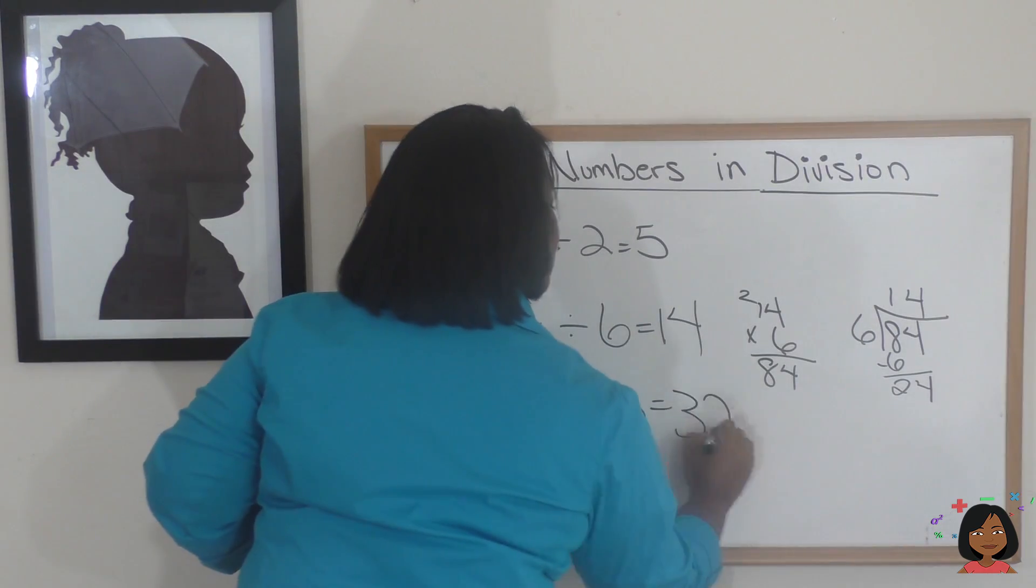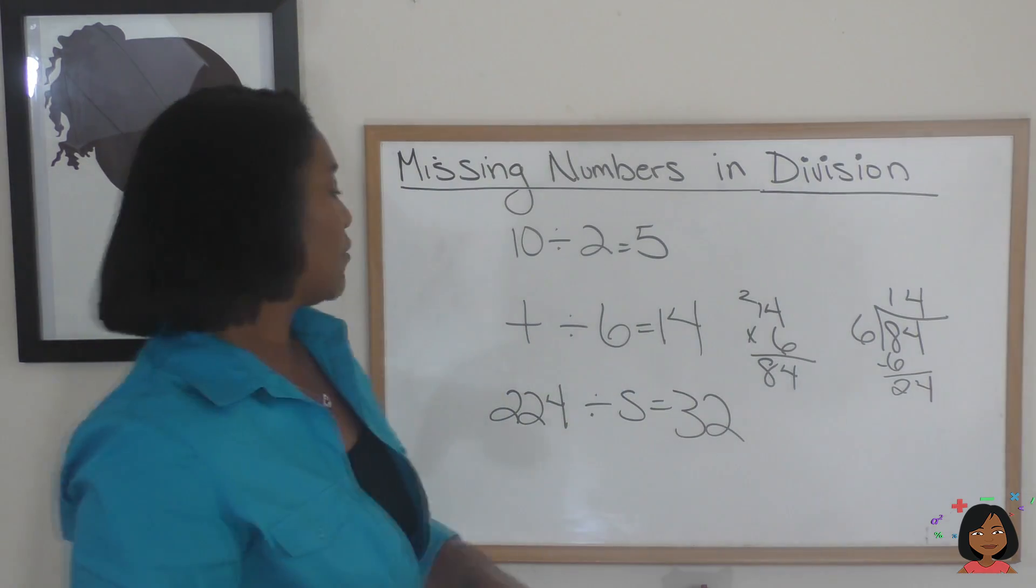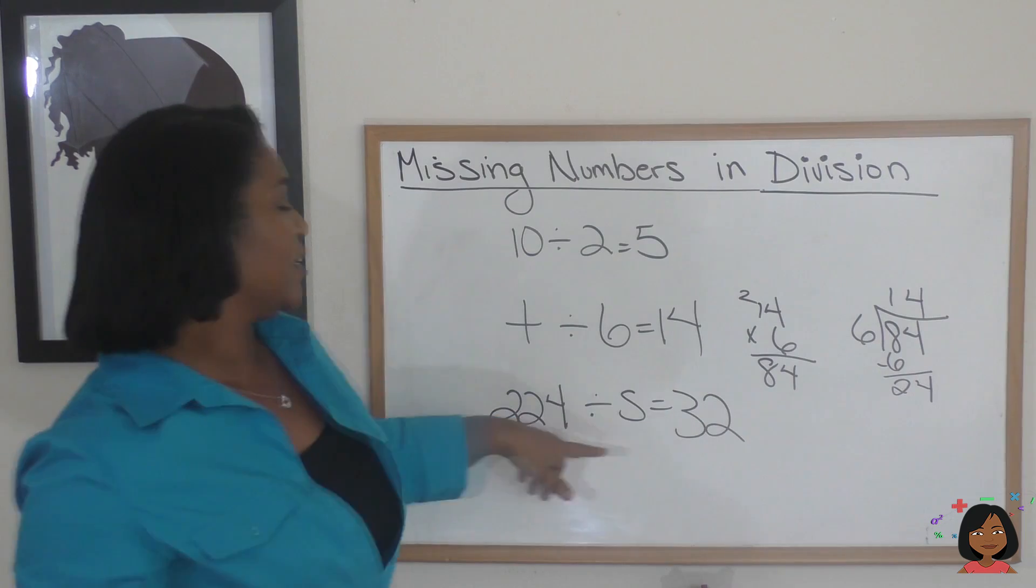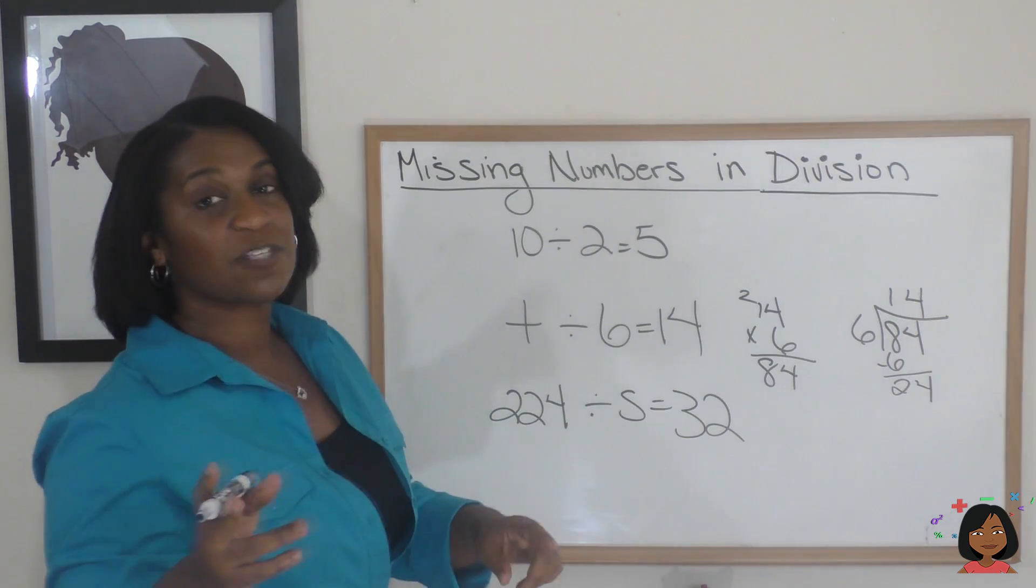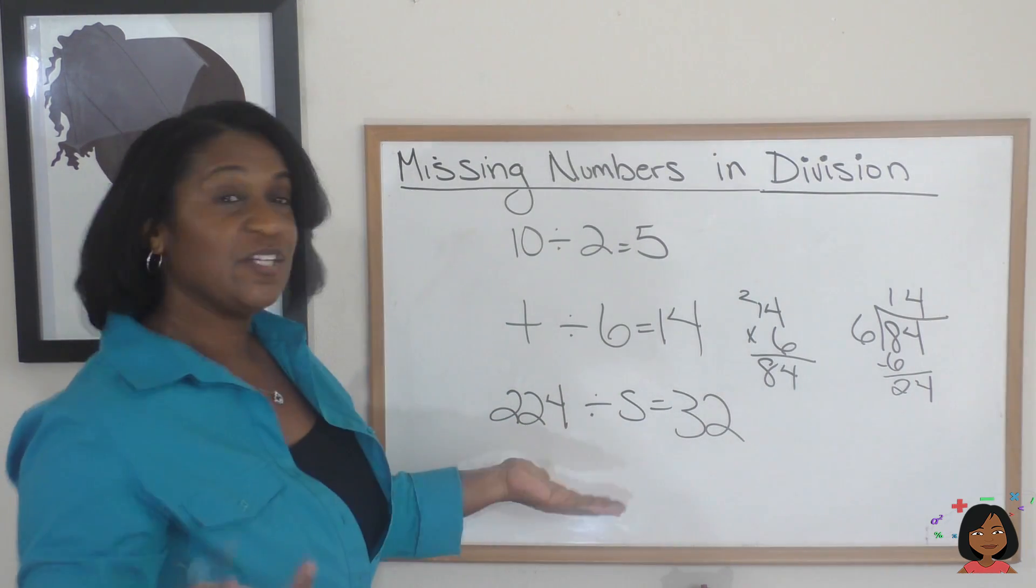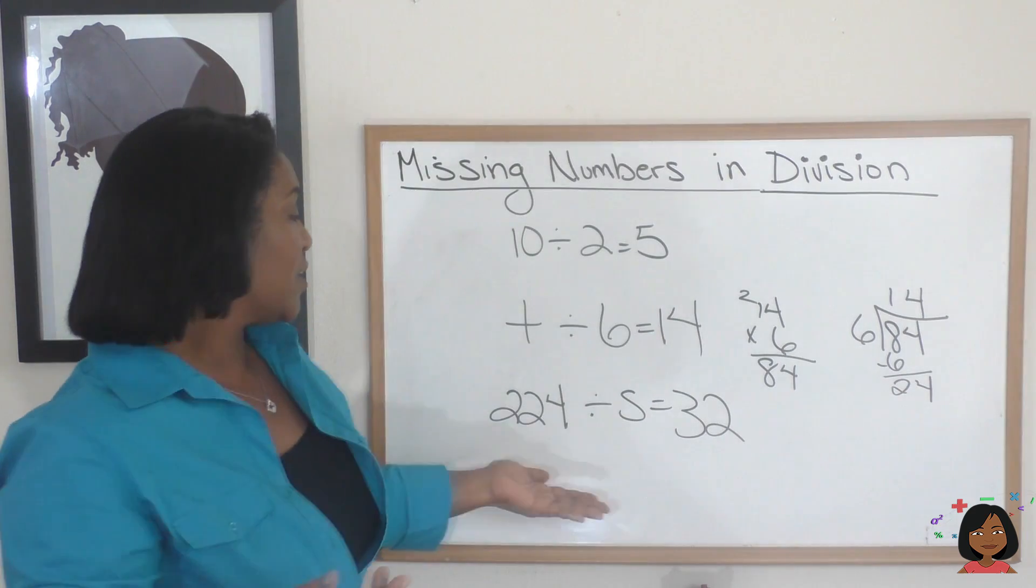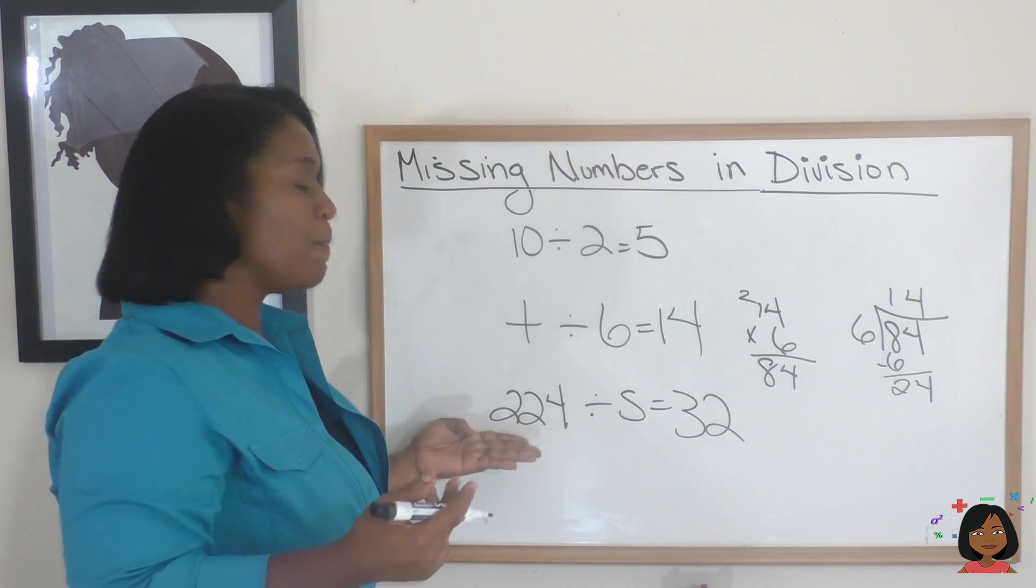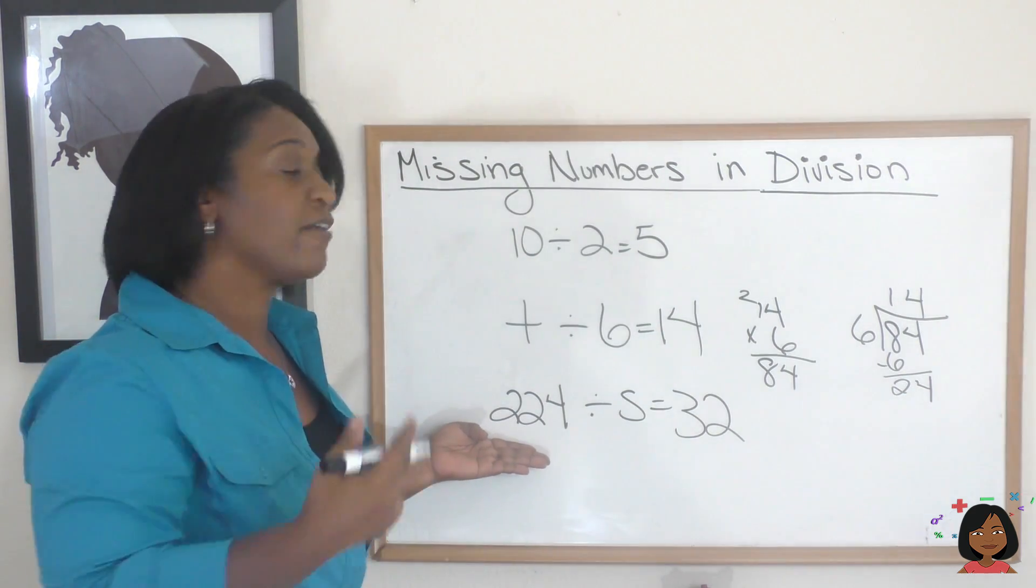So how would we find it? This time we wouldn't use multiplication. We actually would need to use division here. We can say, well, what's 32 into 224? And that'll give us an answer.